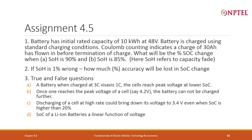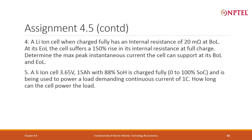I am giving you an assignment problem: a battery has an initial rated capacity of 10 kWh at 48 volts. Batteries are charged using standard charging conditions. Coulomb counting indicates that 30 AH has flowed in before termination of charge. What will the percentage SOC change be when SOH is 90 percent and SOC is 85 percent? If SOH is 1 percent wrong, how much inaccuracy will you see in SOC? There are also some true and false questions — please try to answer them.